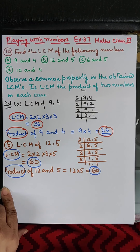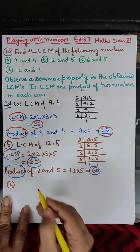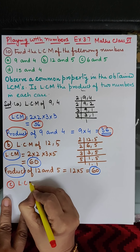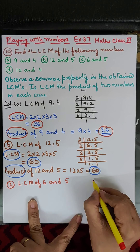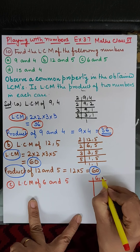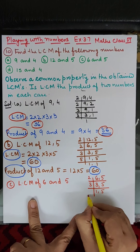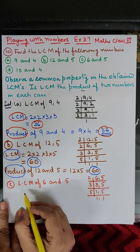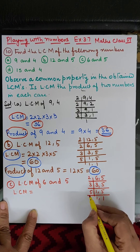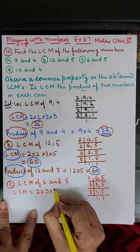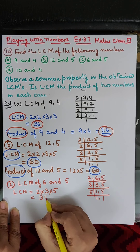Now Part C: LCM of 6 and 5. Dividing: two threes are six, five as it is; then three ones are three, five as it is; then five ones are five. The LCM of 6 and 5 is two into three into five. Two threes are six, and six fives are thirty. So the LCM is 30.